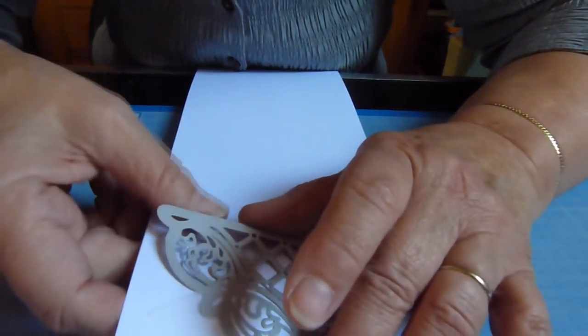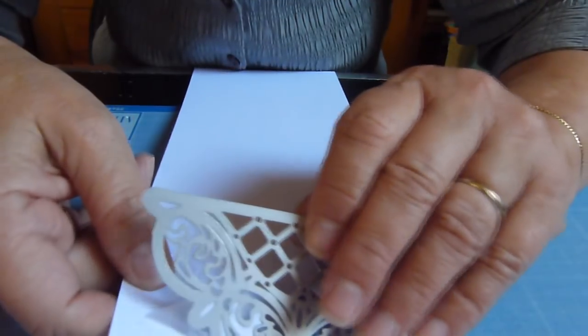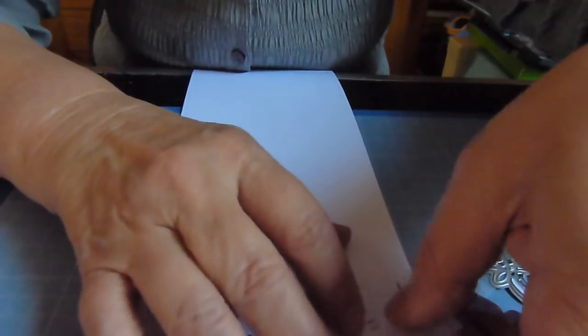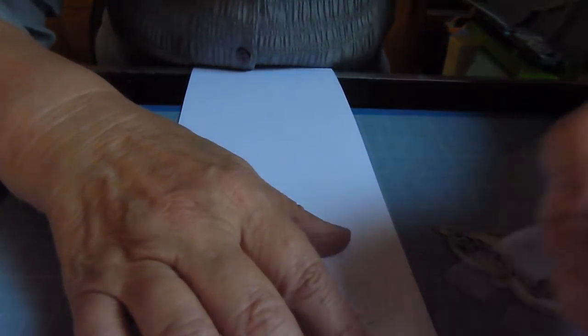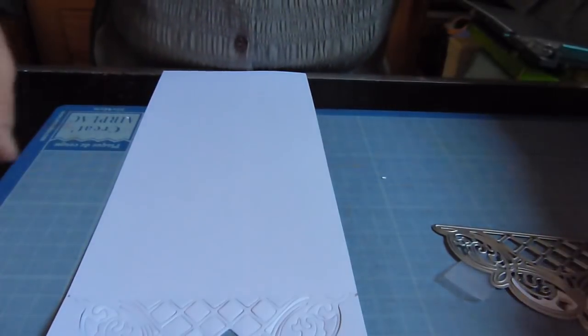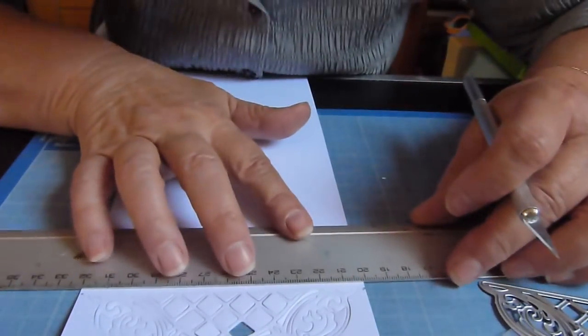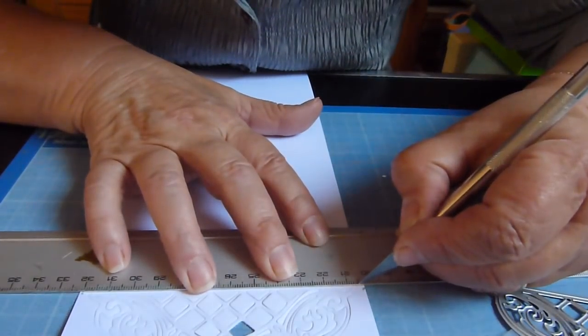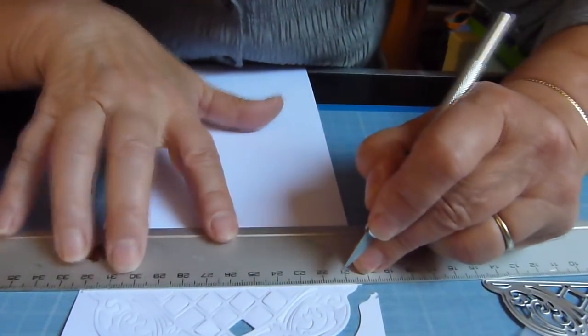Je l'ai passé sous la butchop. Je découpe, je défais délicatement. Je retire mes scotches qui m'ont permis de maintenir. Et je finis la découpe au cutter pour la partie que je vais détacher.